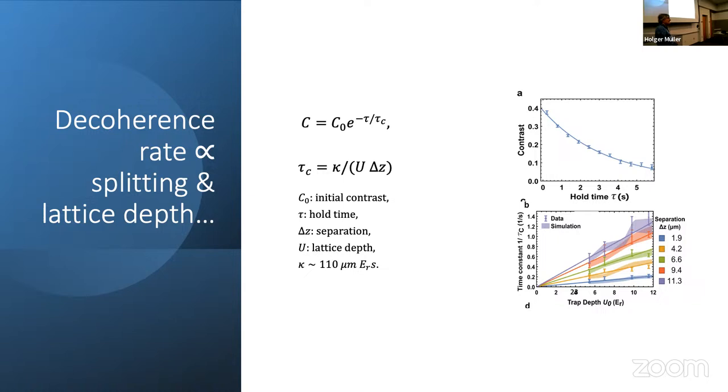But keeping the quantum state alive. Why 20 seconds? Why not 10? Why not 30? Of course, first we were insanely happy about 20 seconds, but we soon realized that we don't understand it. After some work, we had an empirical scaling. The contrast seems to decay exponentially with hold time with a time constant tau c, which is inversely proportional to the lattice depth. So stronger laser power makes it less coherent. You might have expected that. And larger wave packet separation makes it less coherent also. And that's all we knew for a very long time.